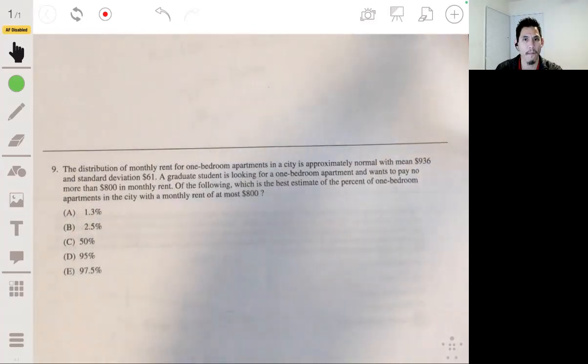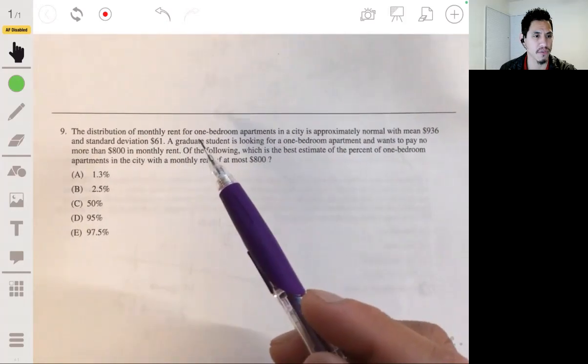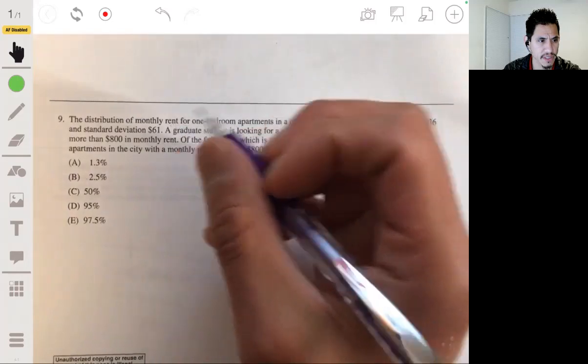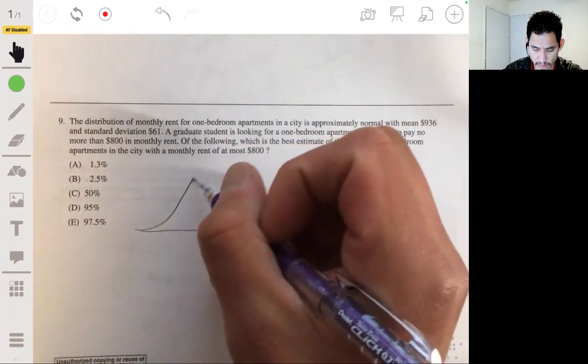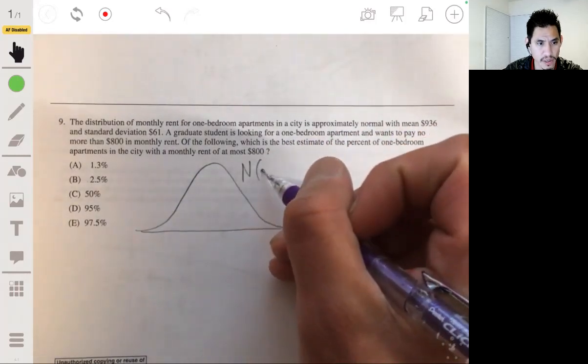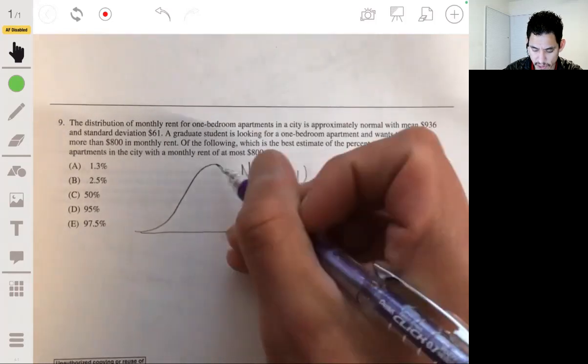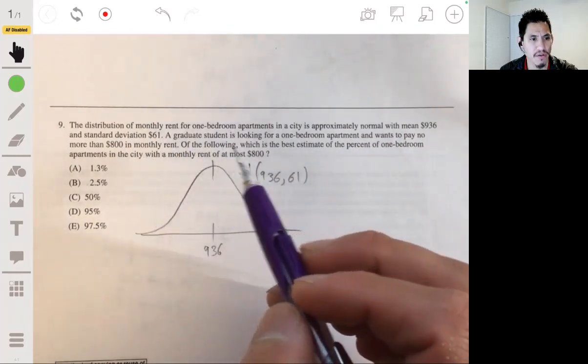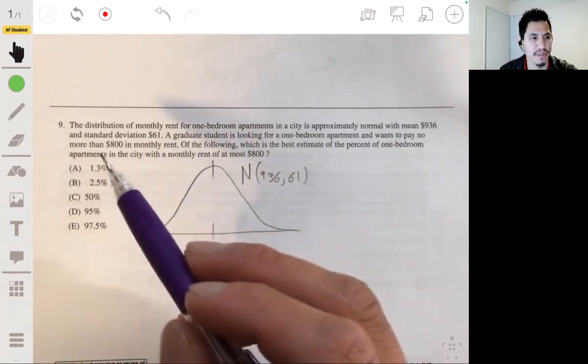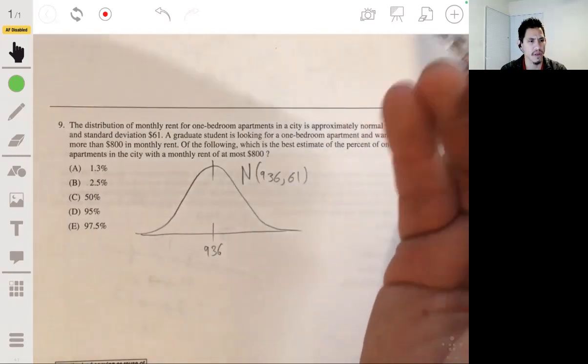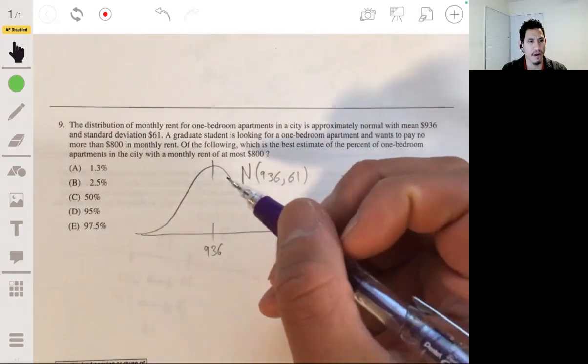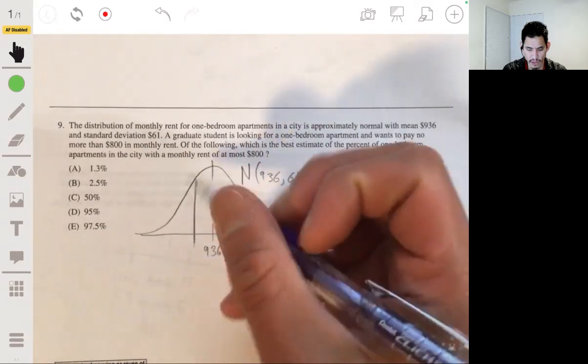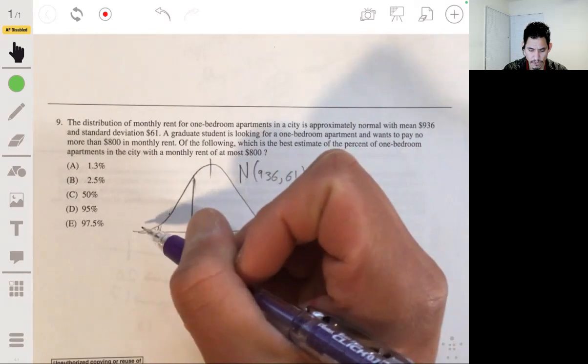Problem nine. The distribution of monthly rent for one bedroom apartments in the city is approximately normal with mean $936 and standard deviation $61. So let me draw a normal curve. Normal with mean 936, standard deviation 61. A graduate student is looking for a one bedroom apartment and wants to pay no more than $800 monthly rent. Okay, so we basically want to look for the proportion or the area underneath this normal curve from 800 and below. So 800 is going to be to the left.